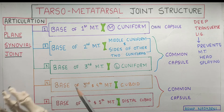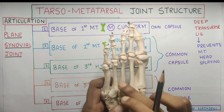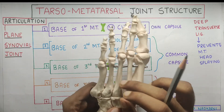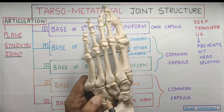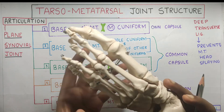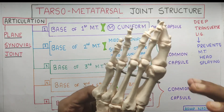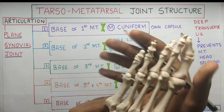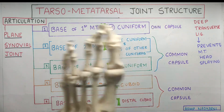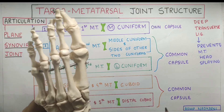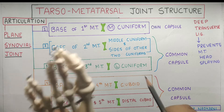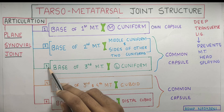The third articulation involves the third metatarsal, which predominantly articulates with the lateral cuneiform. It also shares some articulation with the cuboid bone. In the artificial bone set, the drills holding the structures together make it difficult to see all the articulations clearly, but the third metatarsal primarily articulates with the lateral cuneiform.